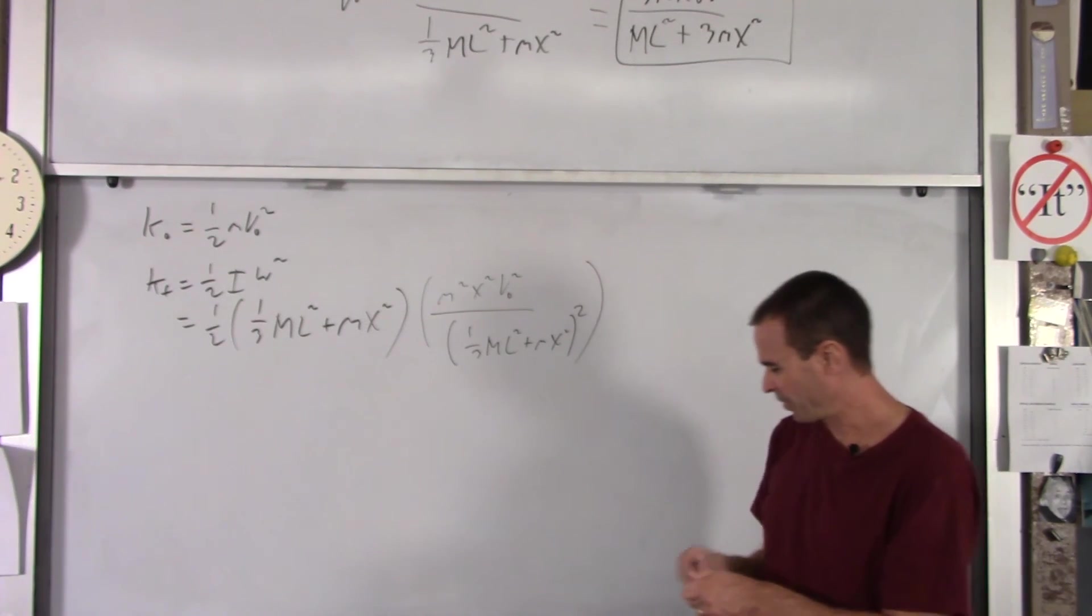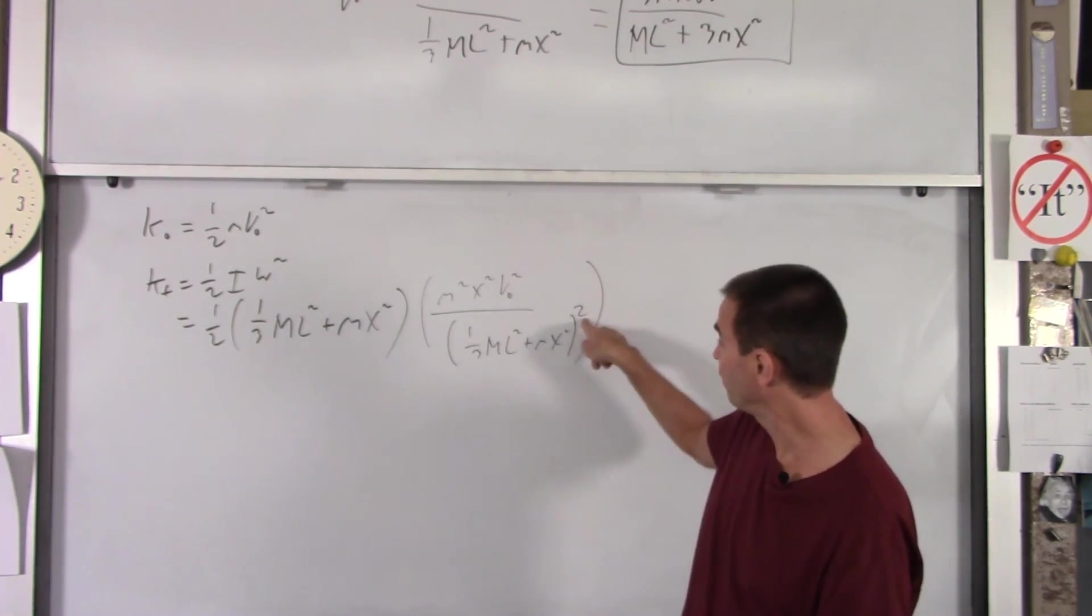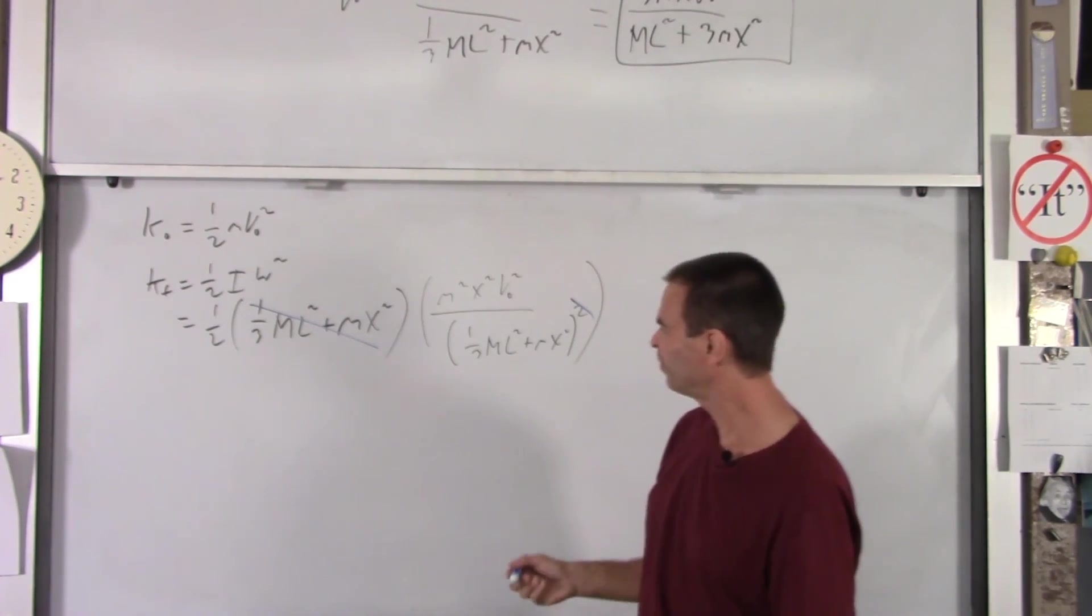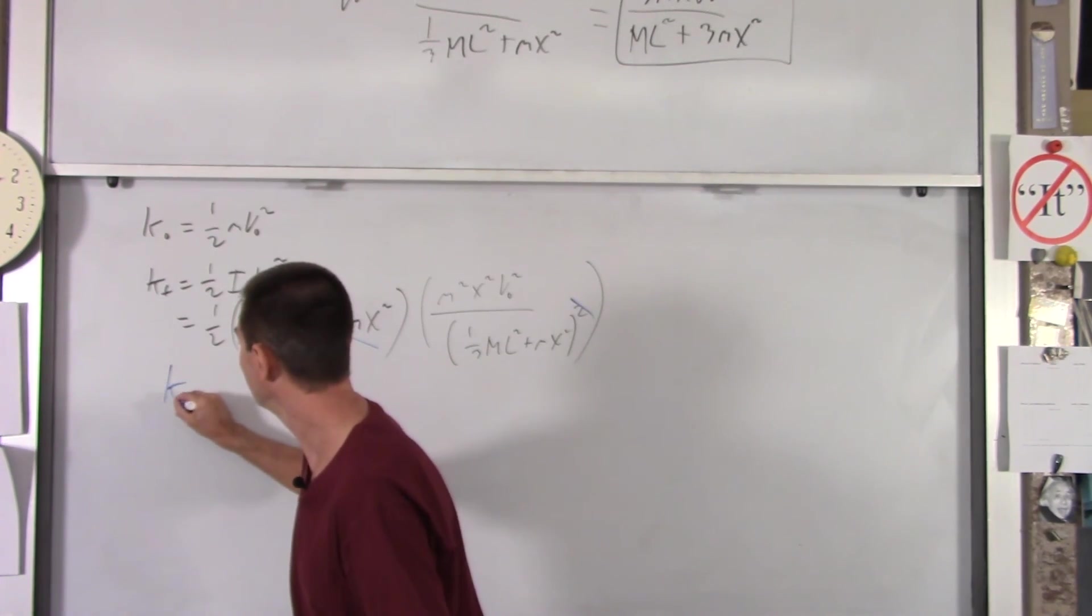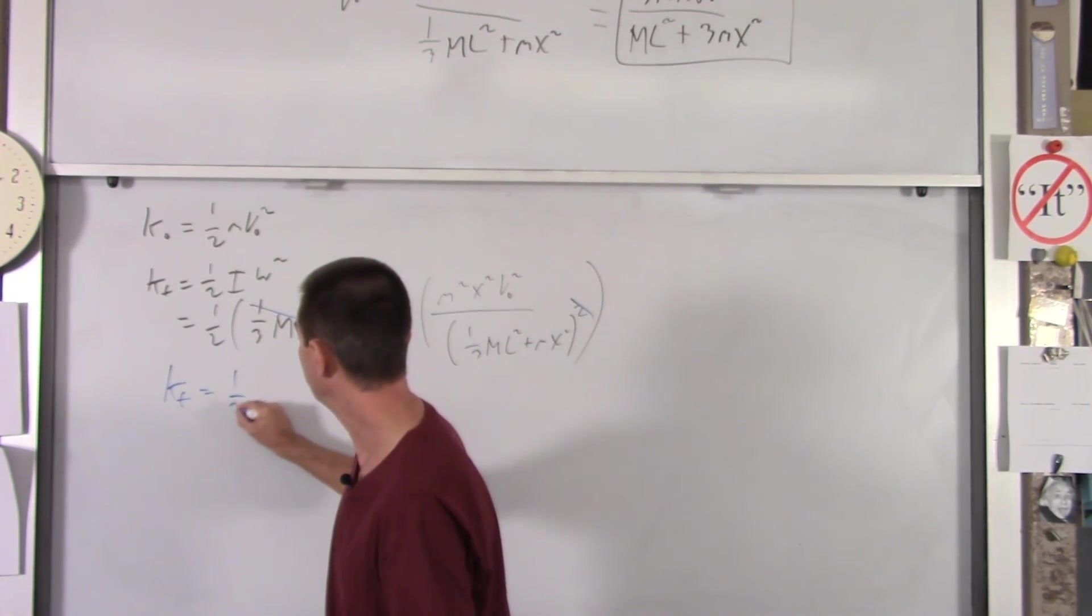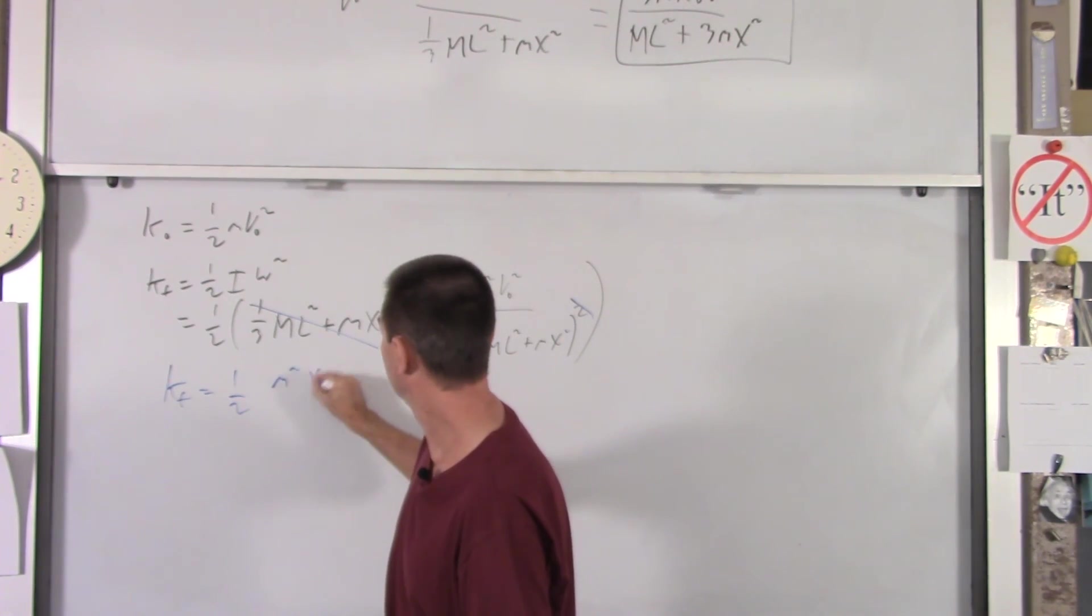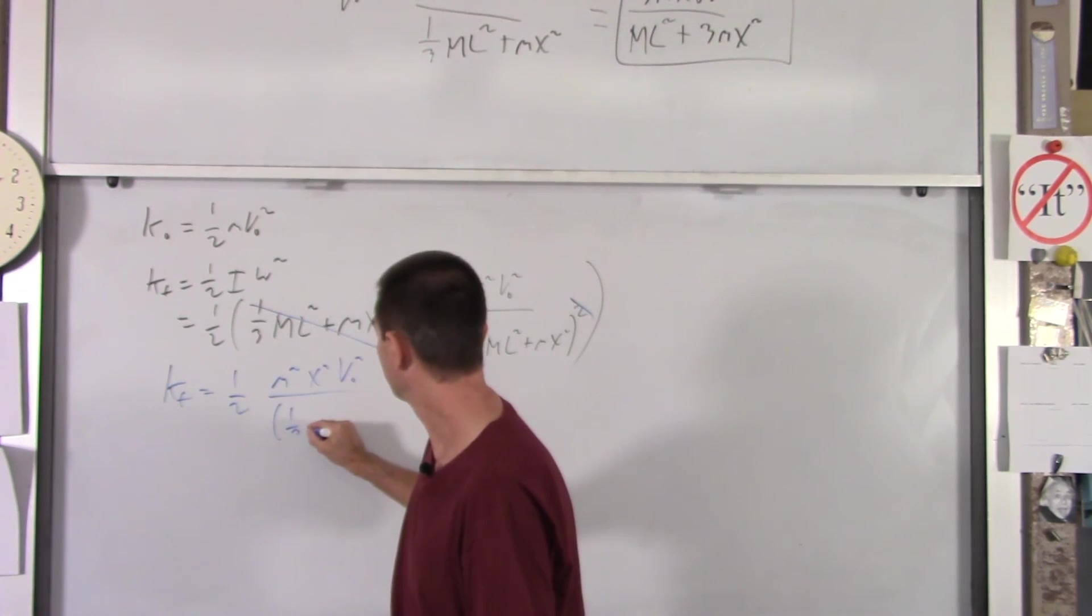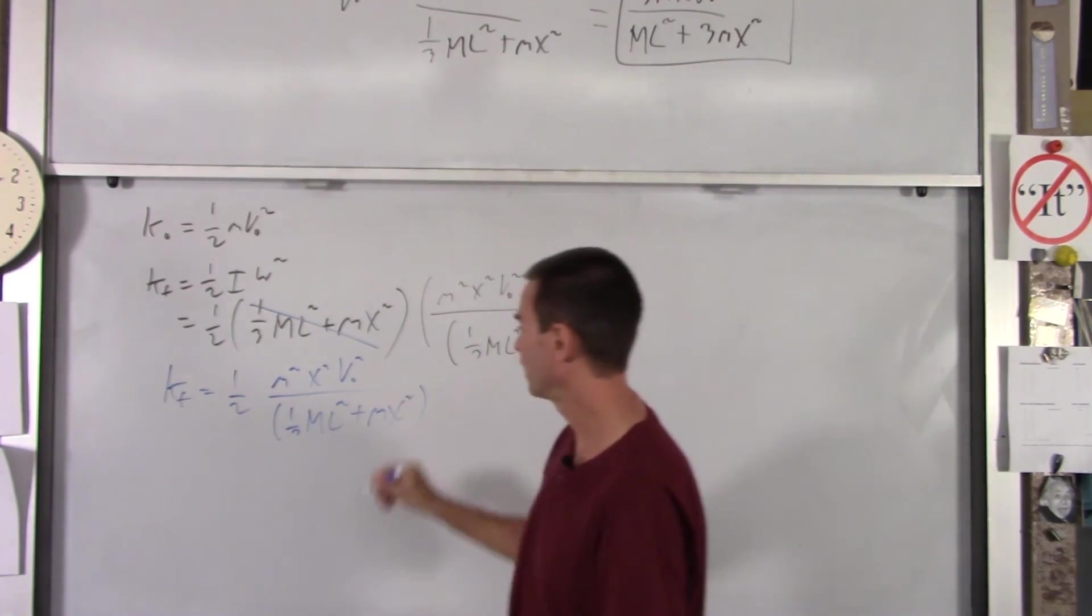Now, you can do a little math here. So at this point, we're doing a lot of math. This one of these cancels with this. And that's really all the simplifying you want to do here. So our k-final is 1/2. You got all these. So m squared, x squared, V0 squared over one of these now, which is 1/3 M L squared plus m x squared.